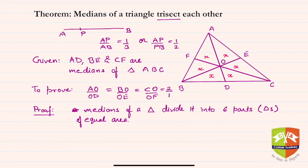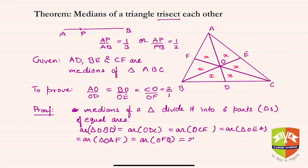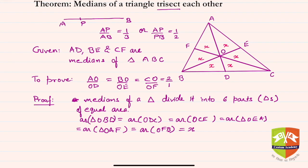So if you see what does it mean? Area of triangle OBD is equal to area of triangle ODC is equal to area of triangle OCE is equal to area of triangle OEA is equal to area of triangle OAF is equal to area of triangle OFB, and all I have labeled as x. All these areas are the same.